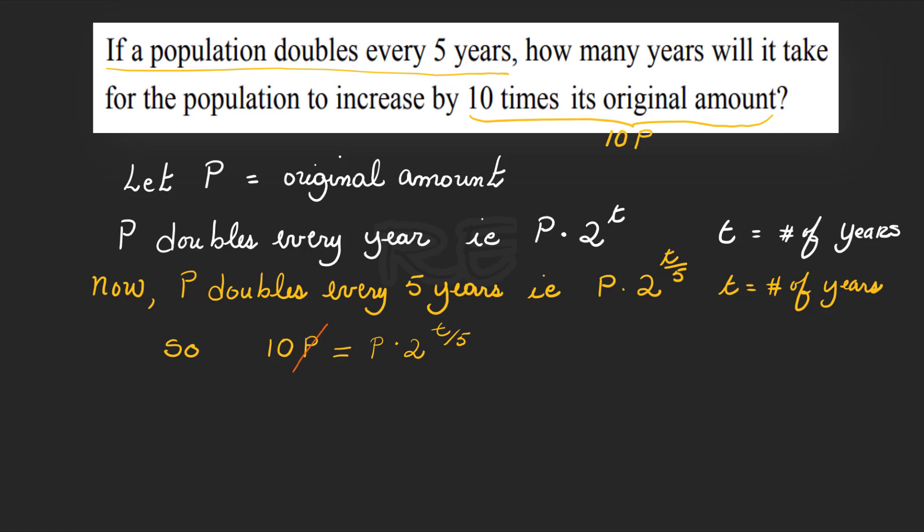First, we can cancel P by dividing both sides by P. So, 10 is equal to 2 to the t over five.